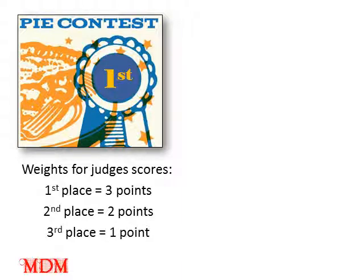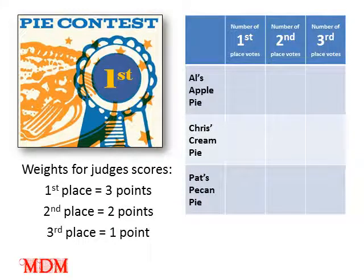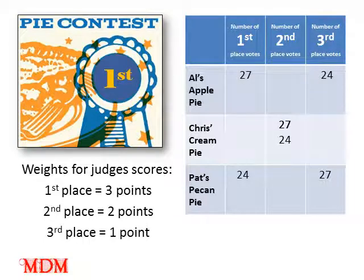Let's take an example. As a publicity stunt for its soon-to-be-published cookbook, the culinary club of Smallville decided to have a best pie contest. The entries were narrowed down to three for the final round. Each club member ranked three pies: each first-place vote is worth three points, each second-place vote is worth two points, and each third-place vote is worth one point. Here's a summary of the results: 27 members ranked Al's apple pie first, Chris's cream pie second, and Pat's pecan pie third. 24 members ranked Pat's pecan pie first, Chris's cream pie second, and Al's apple pie third. Two members ranked Chris's cream pie first, Pat's pecan pie second, and Al's apple pie third.